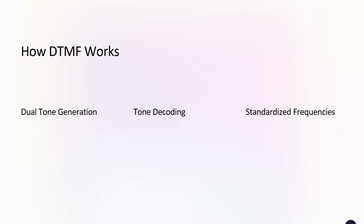About standardized frequencies: DTMF standards specify a set of eight tone frequencies — four low and four high — that can be combined to represent 16 possible DTMF signals, covering digits 0 to 9, pound, star, and A to D.